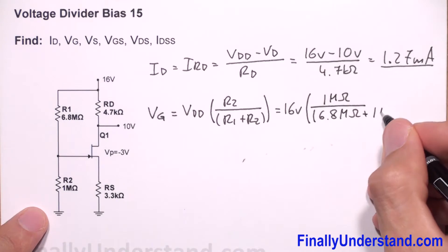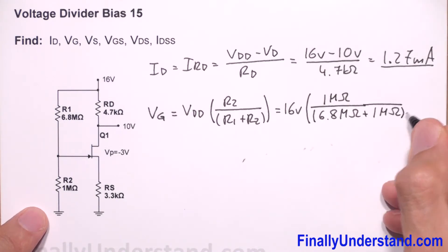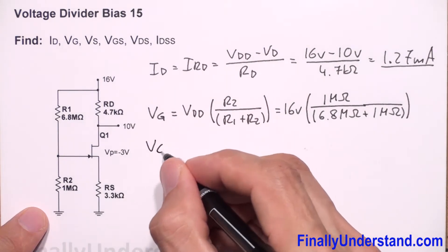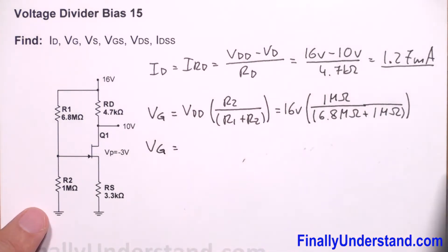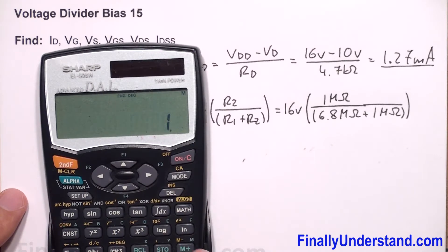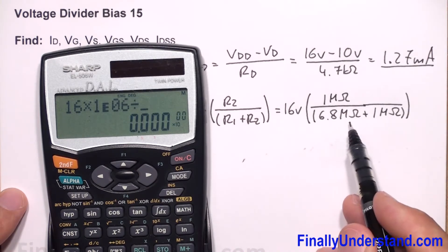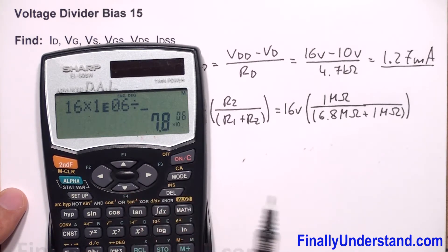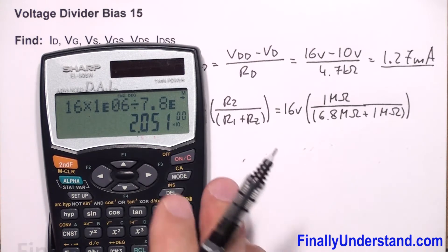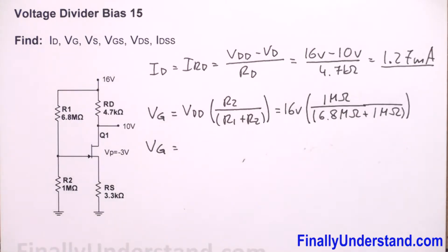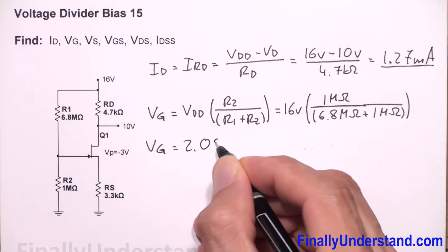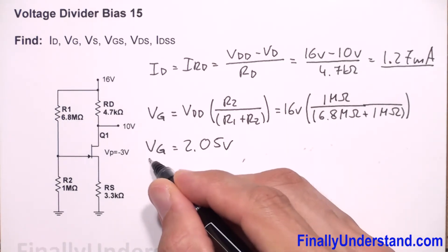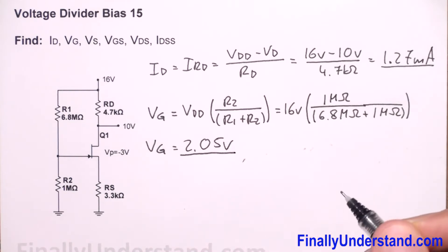So VG equals 16 times 1×10⁶ divided by the total resistance in the denominator. This works out to VG = 2.05 volts.